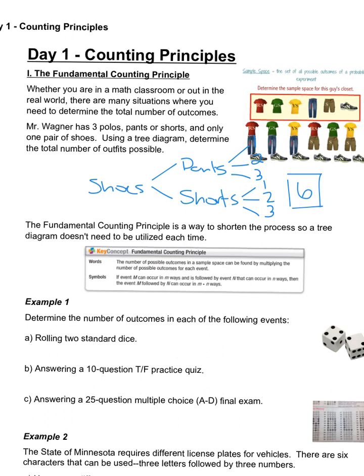So the Fundamental Counting Principle is all about this idea so we don't have to draw a tree diagram every single time. The Fundamental Counting Principle says you take each of the number of outcomes and you just multiply it together, and that will be the total number of outcomes in that combined event.